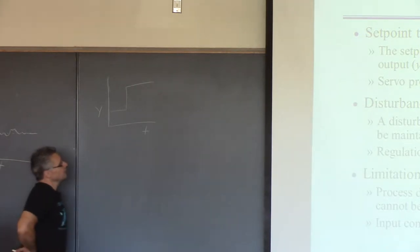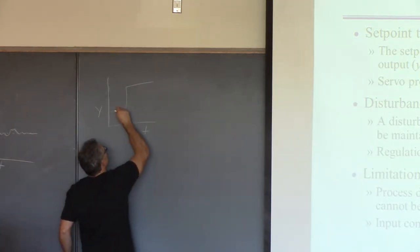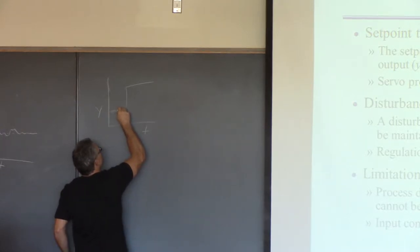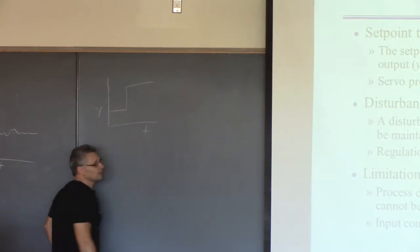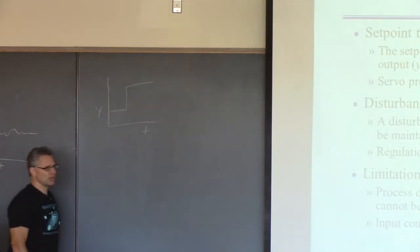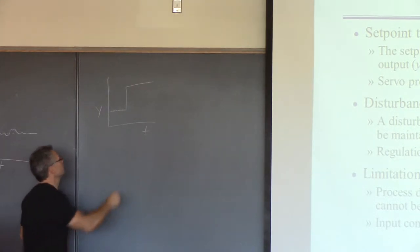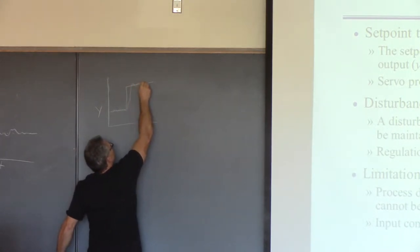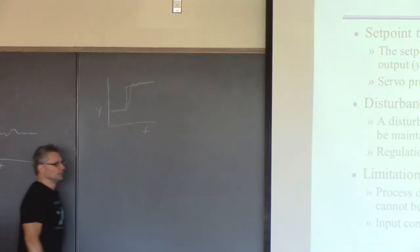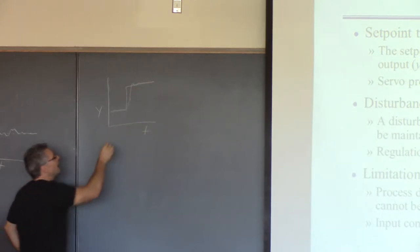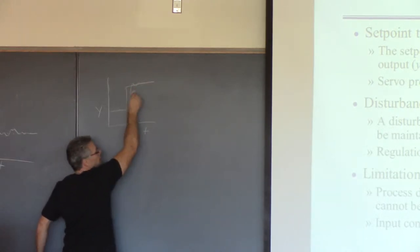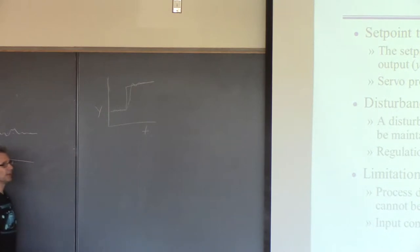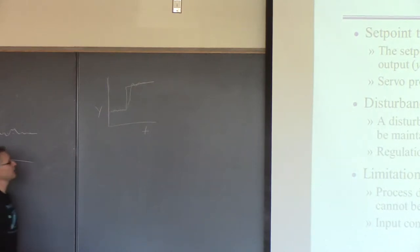The idea of the controller is to take the output, which it's keeping near the current level, and then at some point it realizes the set point's been changed — a 25% increase in production. The controller's job is to get the production rate up there and keep it there, tracking this set point. That would be a continuous kind of manufacturing problem.